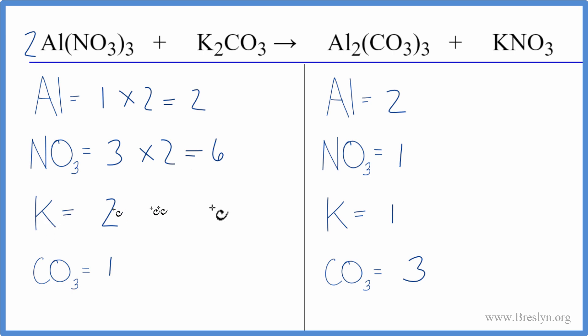Might as well balance the potassiums next. We could just put a two in front of the KNO3, one times two. That'll give us two of those and nitrates, one times two. Now we have two nitrates.